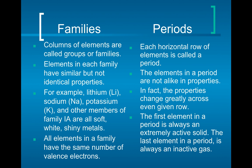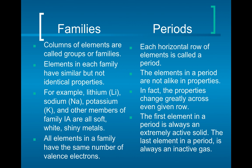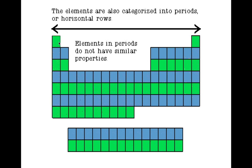Families are columns of elements. Elements in each family have similar but not identical properties, and most importantly, all elements in a family have the same number of valence electrons — the electrons on the outermost shell involved in bonding. Each horizontal row is called a period. Properties change greatly across a period. The first element in a period is always an extremely active solid.